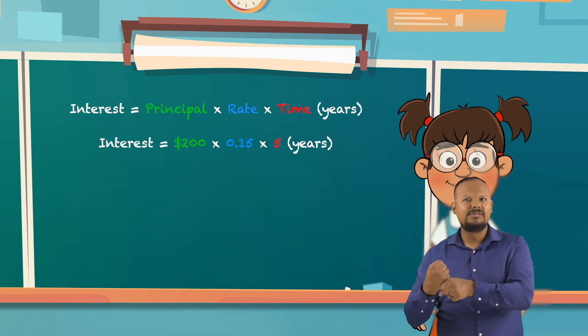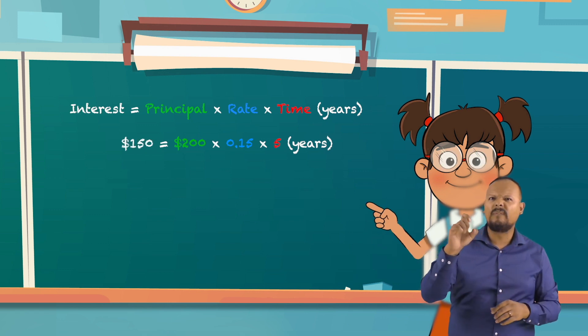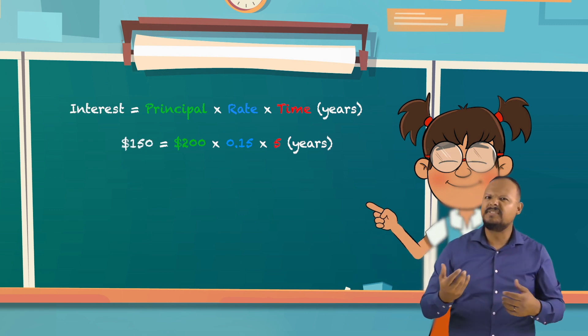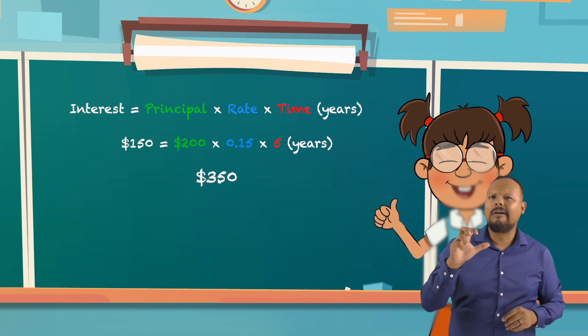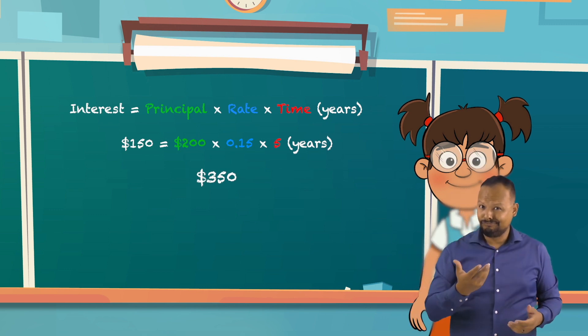So, after 5 years, Frankie will earn $150 in interest, for a total of $350 in savings. Isn't interest cool?